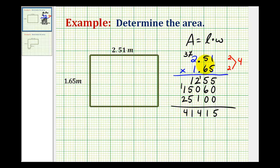So again, if we ignore the decimals, the decimal point would be right here currently. But now since we have to have 4 decimal places in our product, we're going to move the decimal 4 places to the left. So 1, 2, 3, 4. So the product of the decimals would be 4.1415.